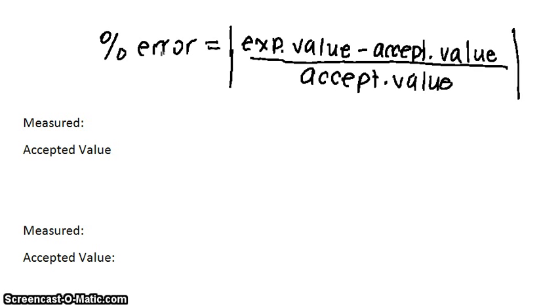To do this, we compare the experimental values to the book values or accepted values. This is the formula we use: percent error equals the experimental value, so the value you got from doing your experiment,